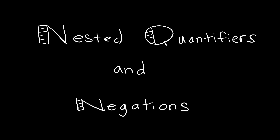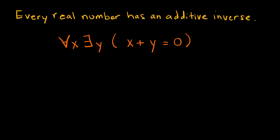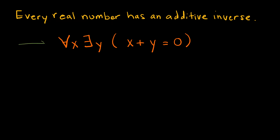In this video, we're going to discuss nested quantifiers and how to negate them. In an upcoming video, we'll discuss how to take a statement like 'every real number has an additive inverse' and write it using quantifiers like: for all x, there exists a y such that x plus y equals 0. For now, I want to discuss when this is true and what the process involved is.